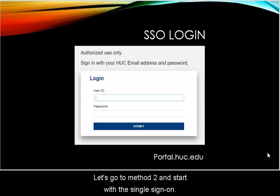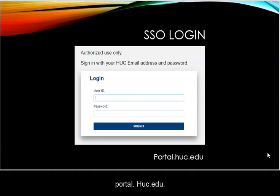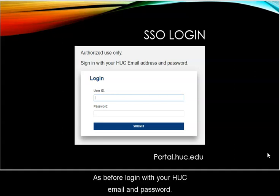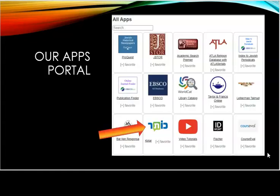Let's go to Method 2 and start with the Single Sign-On. You can get to this from the library website or directly at portal.huc.edu. As before, log in with your HUC email and password. This will take you to the Apps Portal.